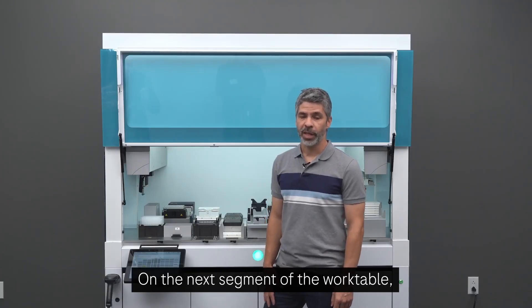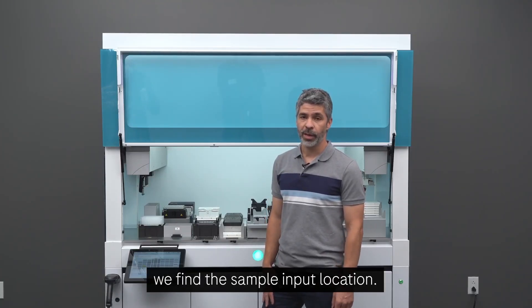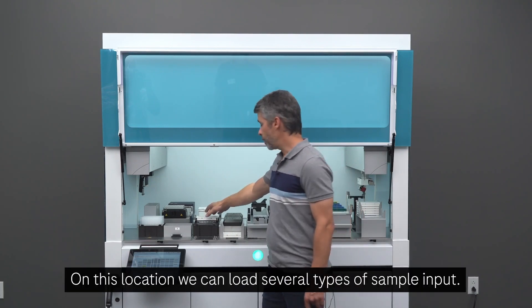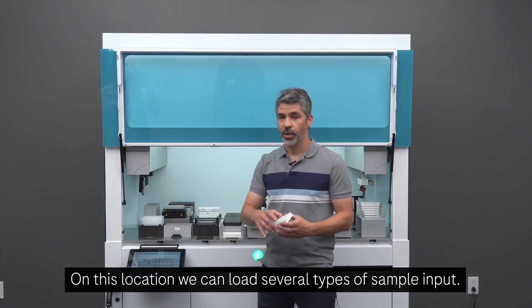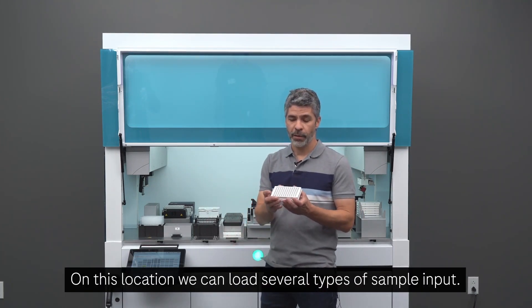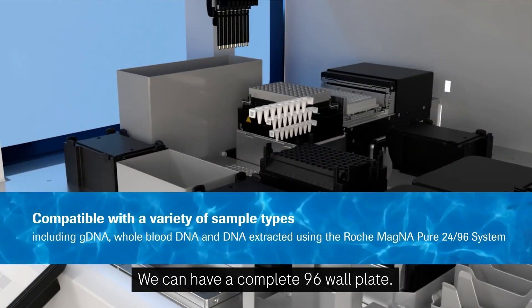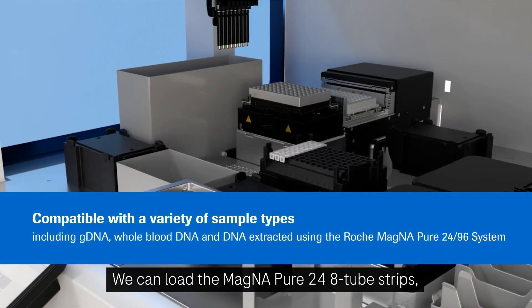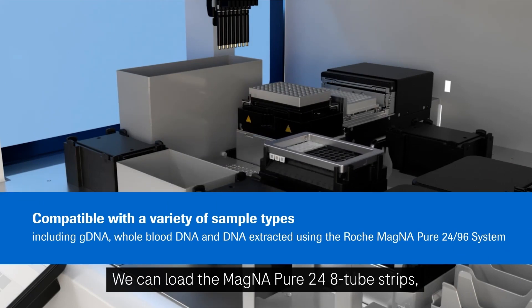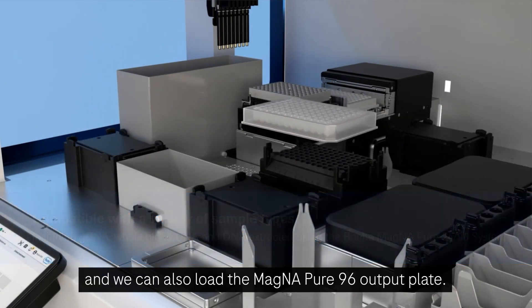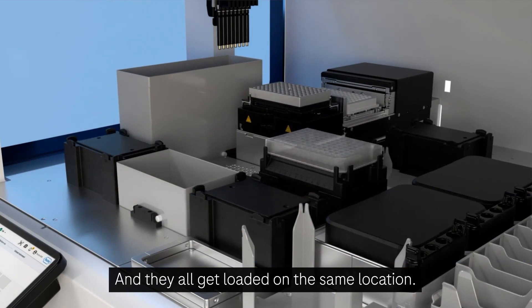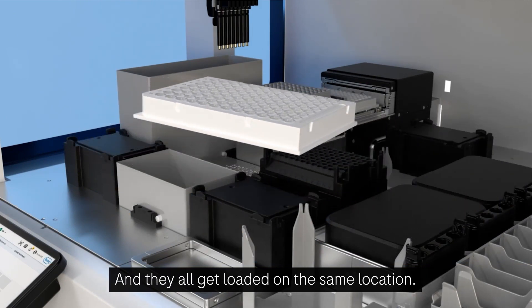On the next segment of the work table, we find the sample input location. On this location, we can load several types of sample input. We can have a complete 96-well plate. We can load the MagniPure 24 8-tube strips. And we can also load the MagniPure 96 output plate. And they all get loaded on the same location.